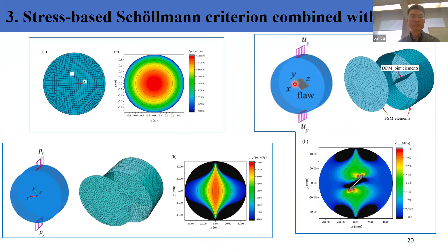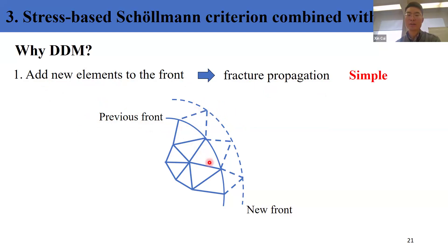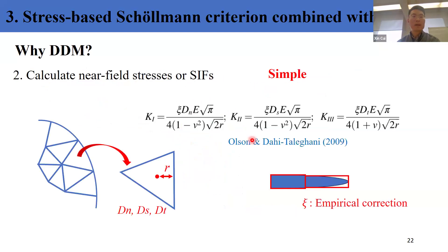Why do we use DDM? There are two main reasons. First, under DDM we only mesh the fractures — there are no elements elsewhere — so we can simulate fracture propagation simply by adding new elements to the front, which is very simple. In contrast, in FEM we usually have to re-mesh the region ahead of the front, which is more complex. The second reason is we can easily calculate near-field stresses or stress intensity factors. The displacement discontinuities of the tip elements allow us to immediately calculate K1, K2, and K3.